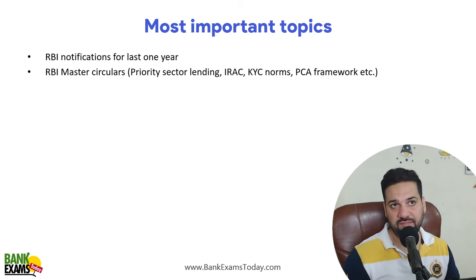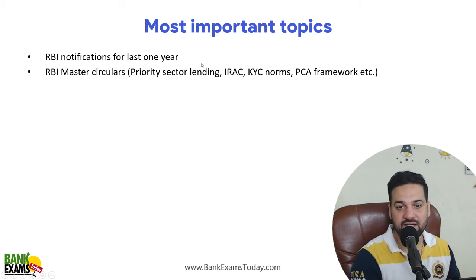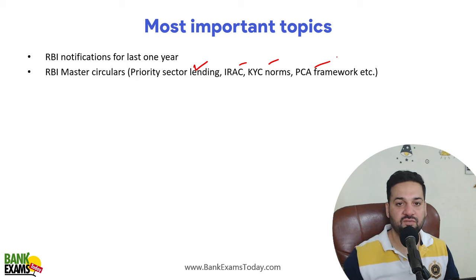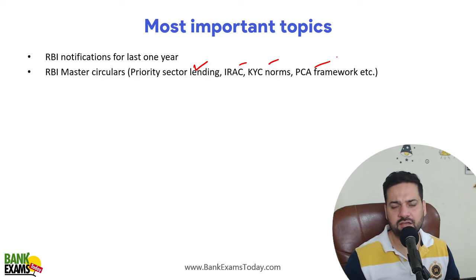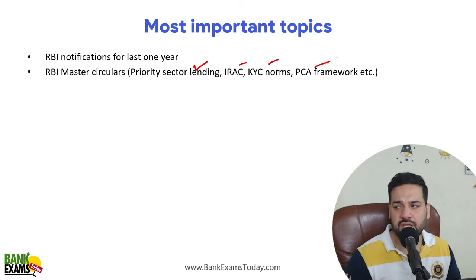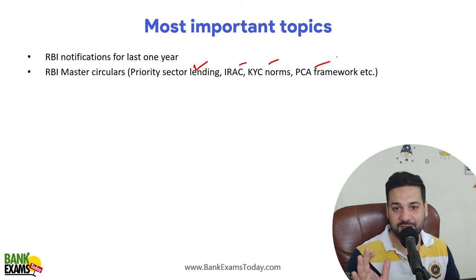See students, there are notifications — the regular updates that come in — and then there are master circulars. But there are certain master guidelines. For example, Priority Sector guidelines, IRAC norms, KYC guidelines, and the PCA framework. These have been around for a long time. Priority Sector Lending is a very important master guideline. Maybe in the last 4–5–6 months there has been no update in it, but that doesn't mean it is not important — it is actually the most important.